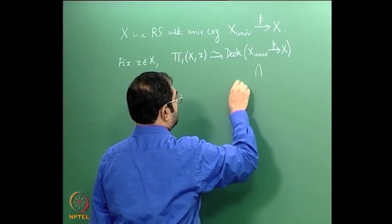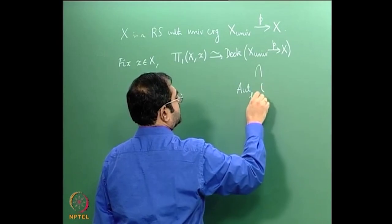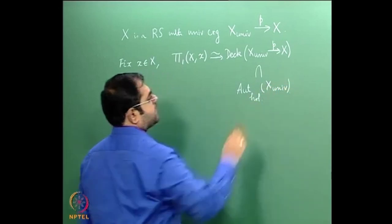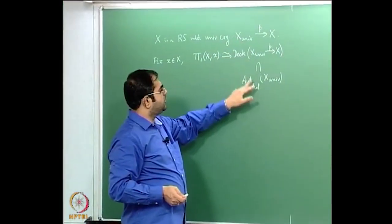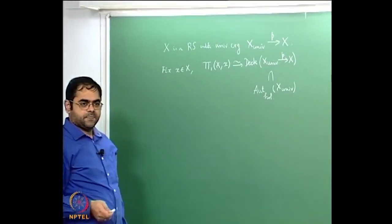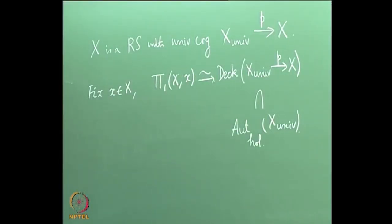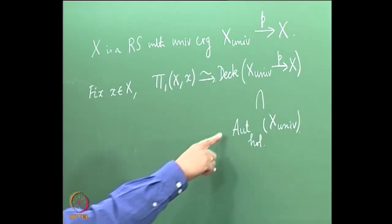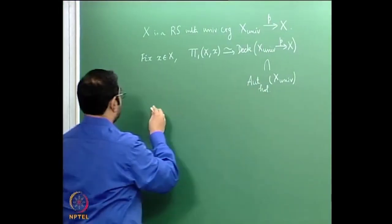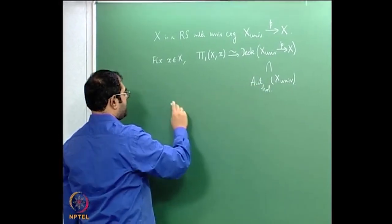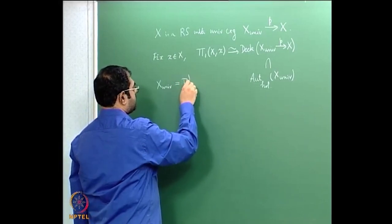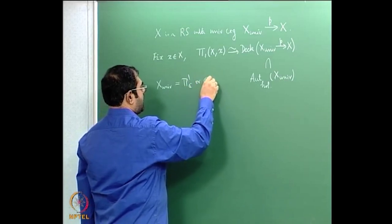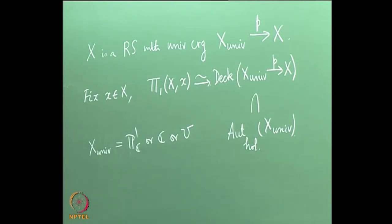The deck transformation group is a subgroup of holomorphic automorphisms of the universal cover, and the universal cover modulo this deck transformation group is precisely X. The question is what are the elements here. X_univ has only three possibilities as a simply connected Riemann surface: it is either P1, the Riemann sphere, the complex plane, or the upper half plane. In each of these cases the group of holomorphic automorphisms consists of Möbius transformations.